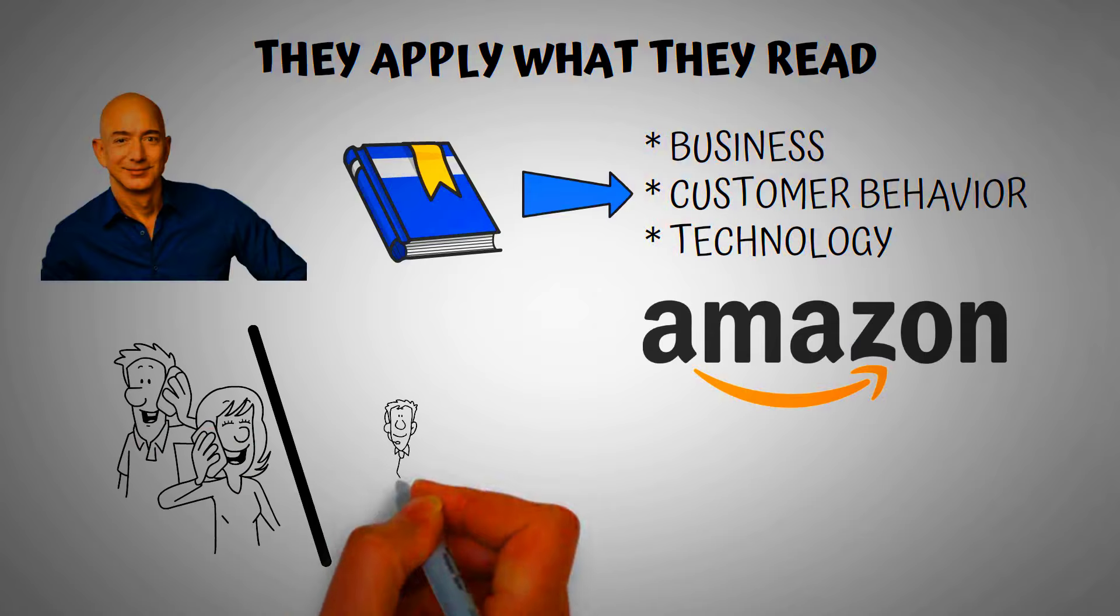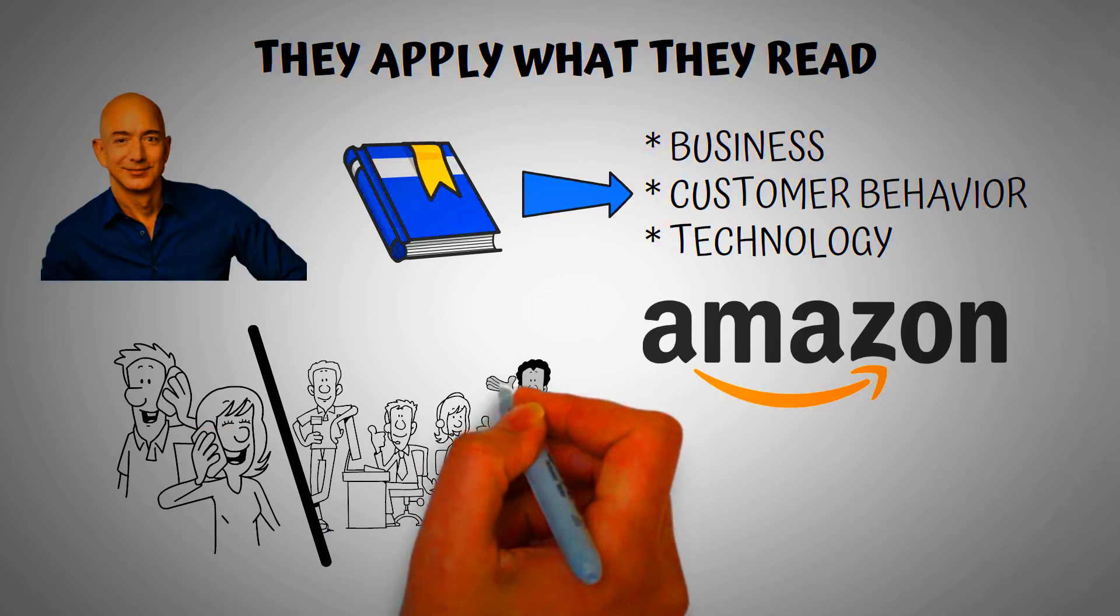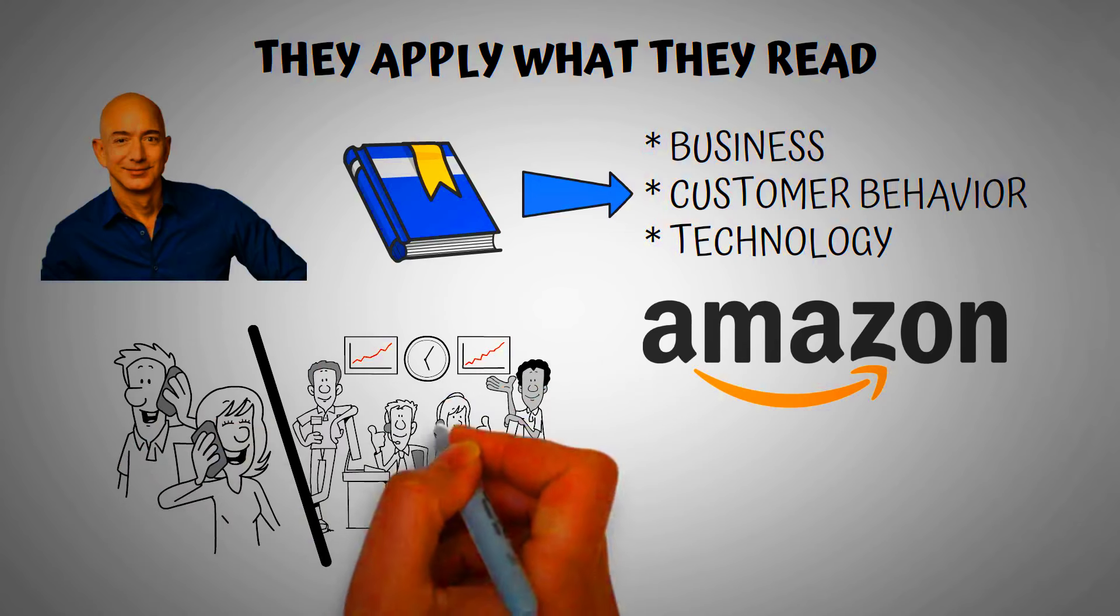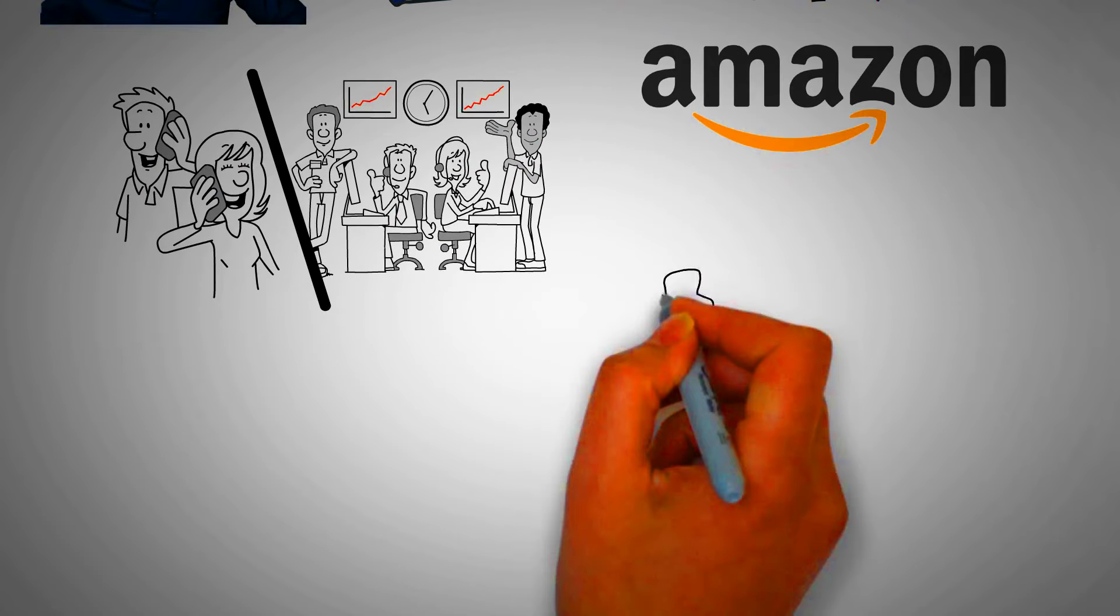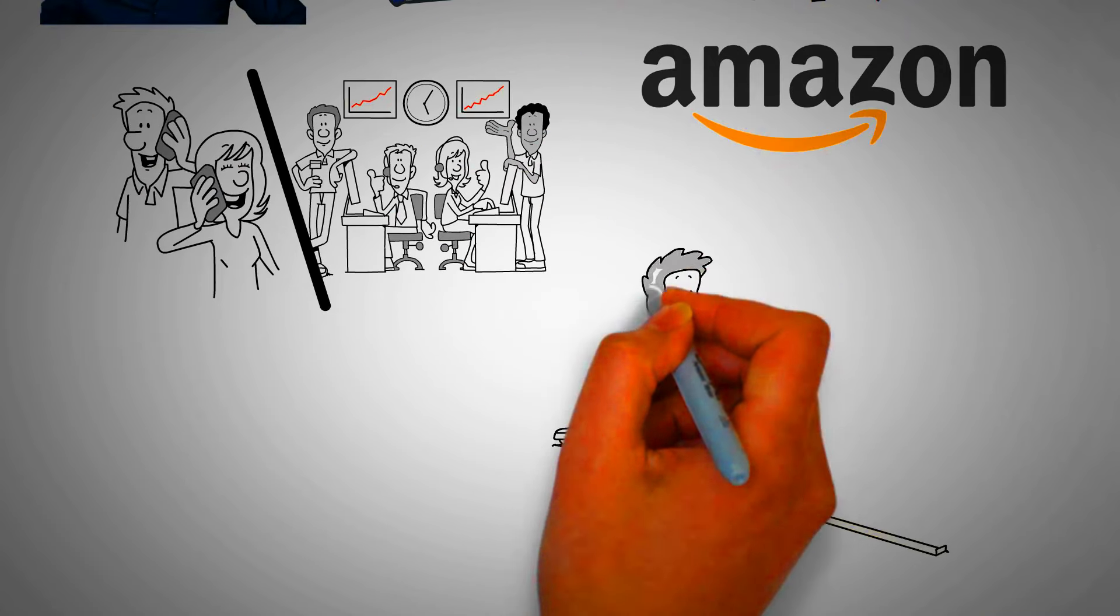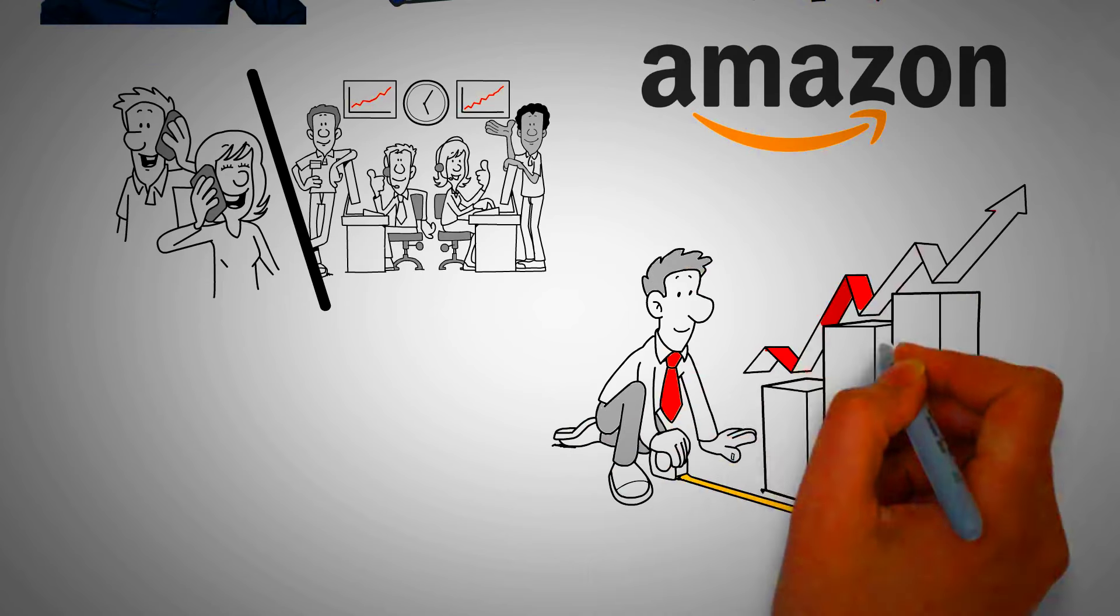One key strategy Bezos learned was focusing on long-term growth and customer satisfaction. Books on customer-centric models and innovation shaped this approach. Leadership and innovation books also influenced Amazon's culture and its drive for improvement and invention.